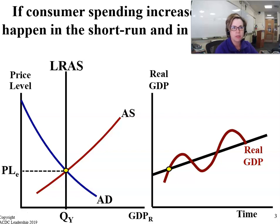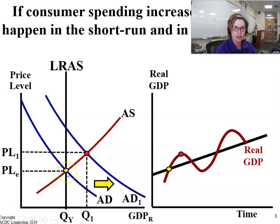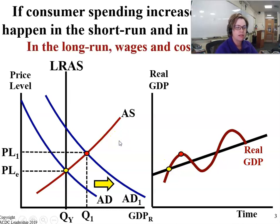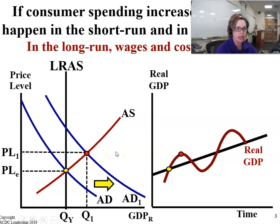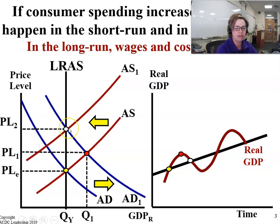What happens if consumer spending increases? What's going to happen in the short-run and in the long-run? In the short-run, you have an increase in aggregate demand from this yellow point to this red point, and over here on the business cycle graph as well. In the long-run, however, wages and costs are going to go up because here we have inflation. So workers are going to negotiate for higher wages, and that's going to shift aggregate supply to the left.